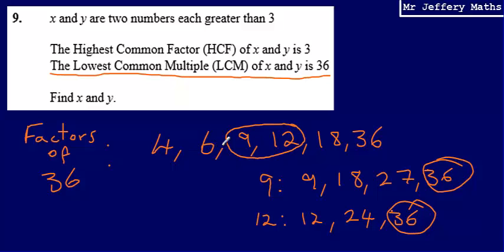So it could be 9 and 12. It could also be 6 and 9, which also have a highest common factor of 3. But 6 and 9 have a lowest common multiple of 18, so it can't be those two. My answer is 9 and 12.